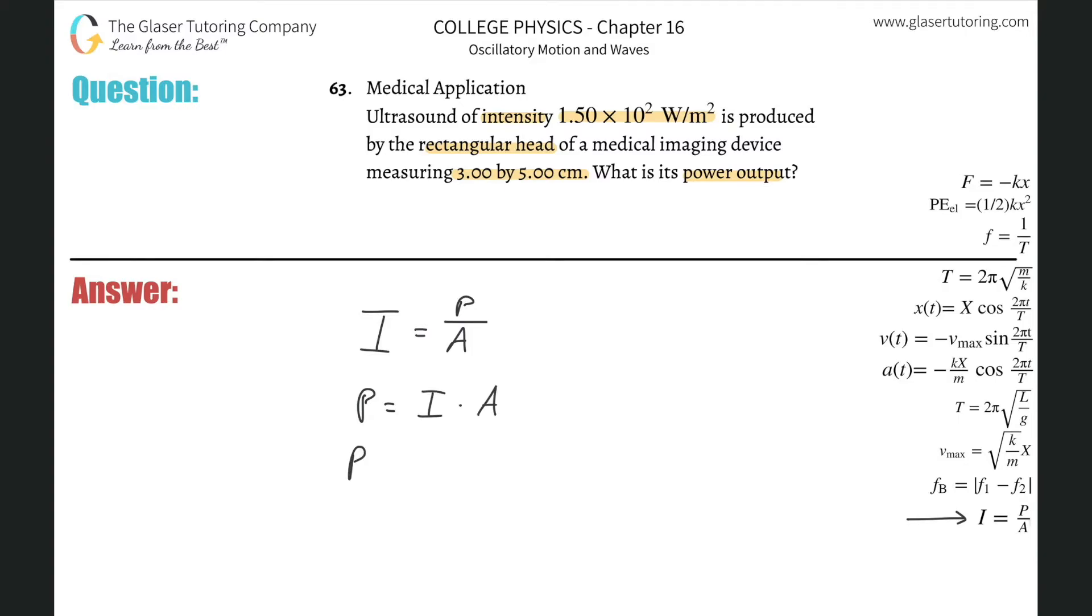Here the intensity they told us is 1.5 × 10². And the area, well, we're dealing with something rectangular. They told us the two dimensions, so we can simply multiply them together to find the area.